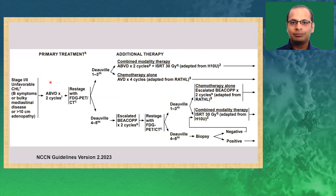For unfavorable early stage disease, the algorithm is slightly simpler. Start with ABVD two cycles, do an interim PET. For combined modality, give two more cycles of ABVD and 30 Gy of radiation. If PET is negative, you can omit bleomycin and continue with AVD for four more cycles — this is important from the RATHL trial. If Deauville score is 4 to 5, consider escalation to a more toxic regime, BEACOP for two cycles, then proceed accordingly. If disease is responding, consider two more cycles of BEACOP. After two cycles of BEACOP, if Deauville 4-5, re-biopsy.